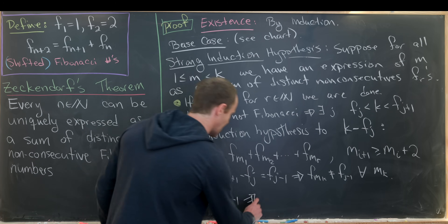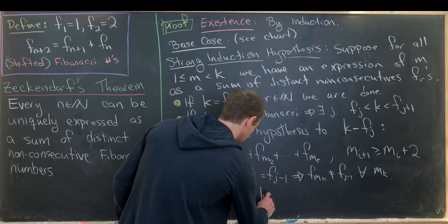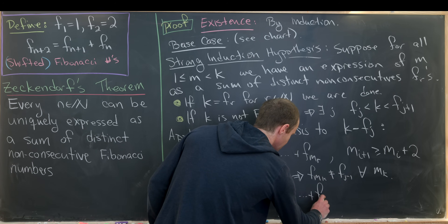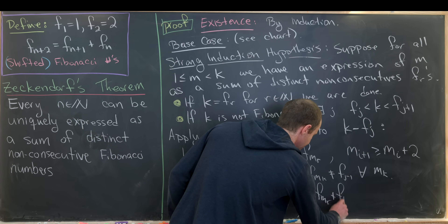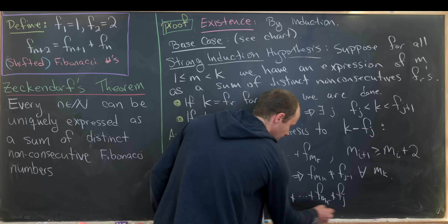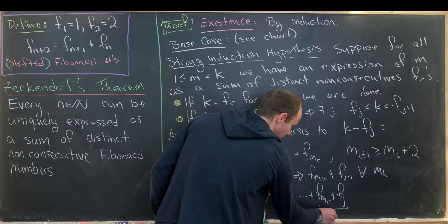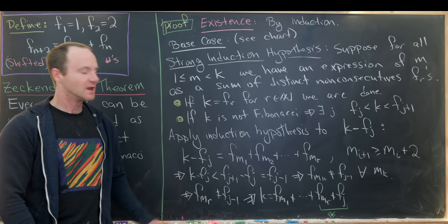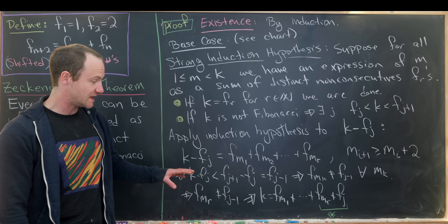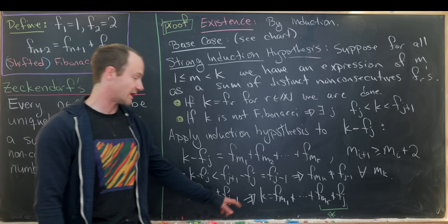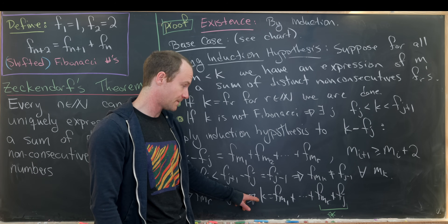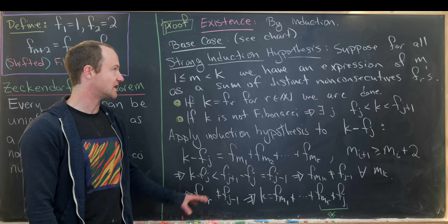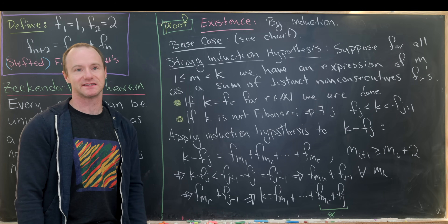So we have k equal to Fm₁ plus ... plus Fmᵣ plus Fⱼ, and by our construction these are non-consecutive. This gives us an expression for k as a sum of distinct non-consecutive Fibonacci numbers, proving the existence statement.